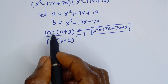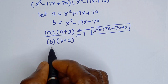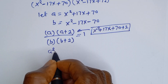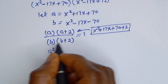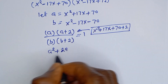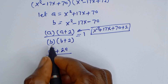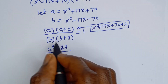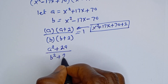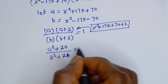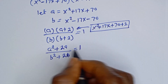Let's multiply out. We get A squared plus 2A, divided by B squared plus 2B, is equal to 1.